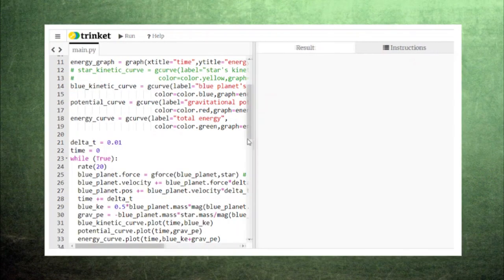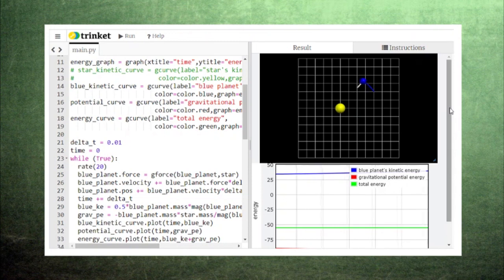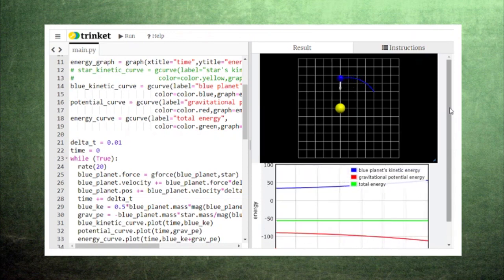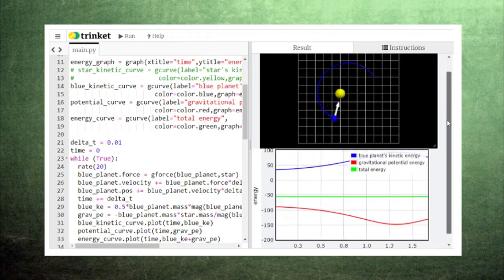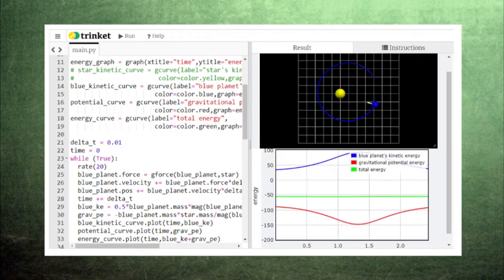Let's start out by giving the blue planet a closed orbit around the star. When the planet is closer to the star, the kinetic energy is higher and the potential energy is lower. When the planet is farther from the star, the kinetic energy is lower and the potential energy is higher. The kinetic energy and potential energy always mirror each other so that the total remains constant.